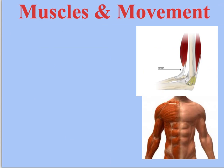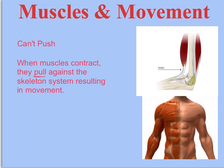Muscles actually can't push. You might wonder how we perform push-type movements such as a bench press or a chest pass. Whenever muscles contract, they are pulling on the skeleton. When the arm extends at the humerus, the tricep is actually pulling on the lower arm, which causes the arm to extend, allowing you to push. Muscles are attached to the skeleton by tendons.